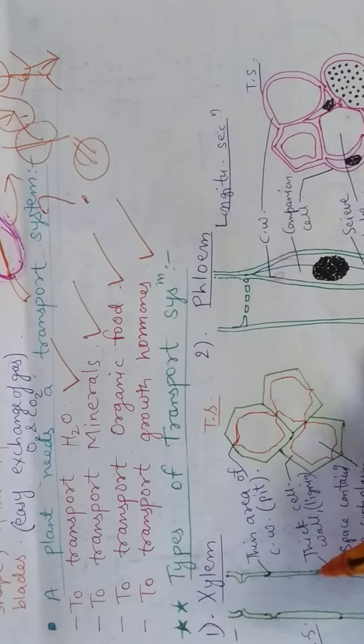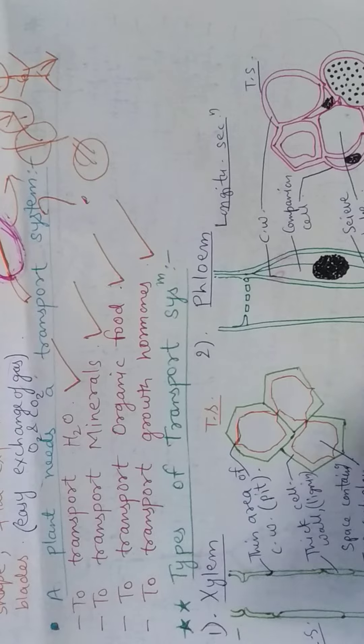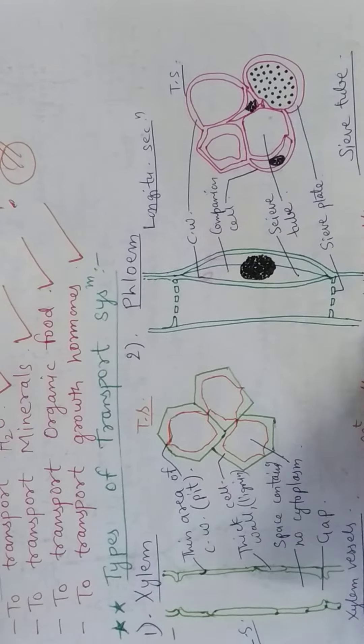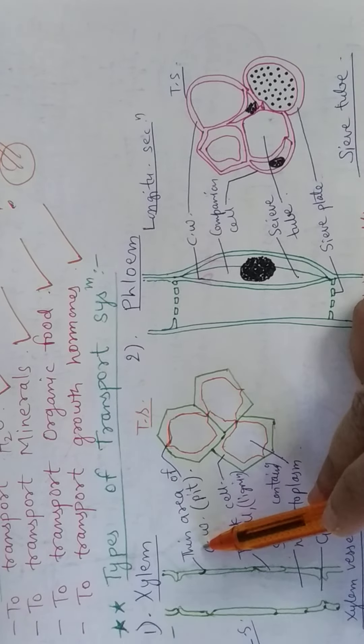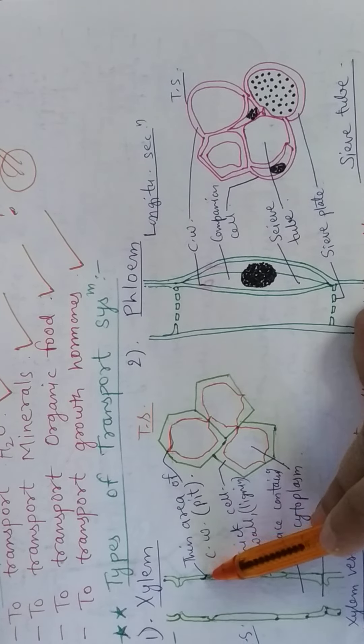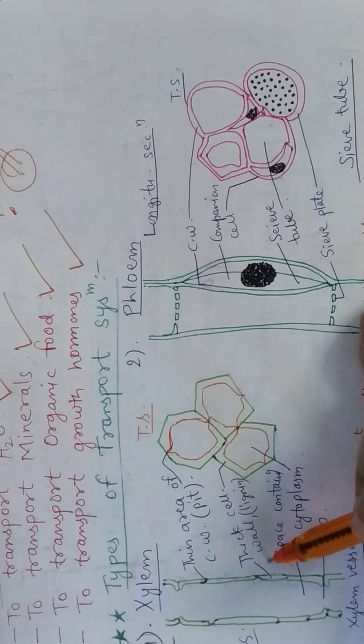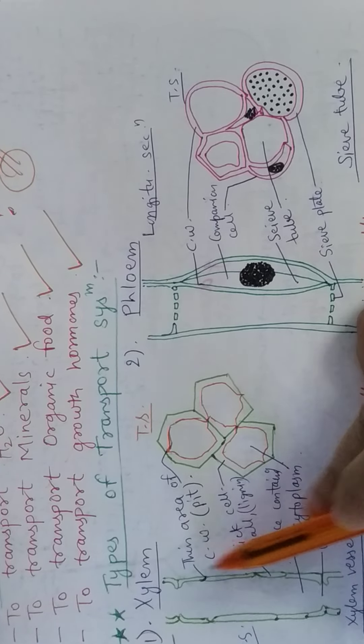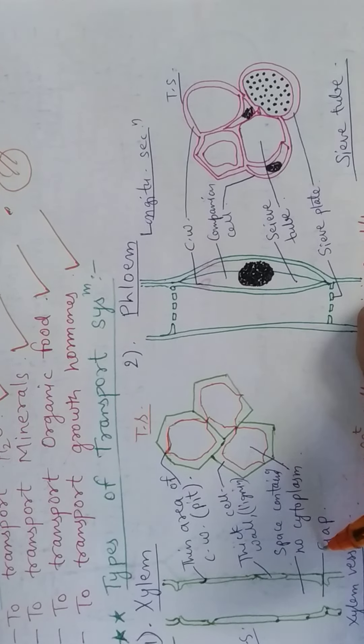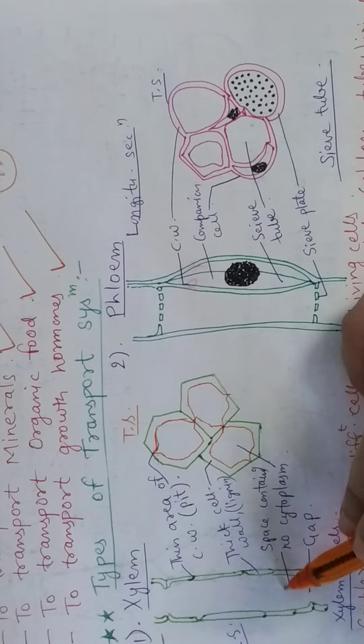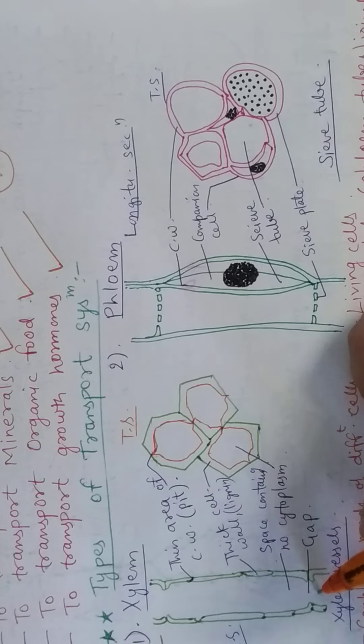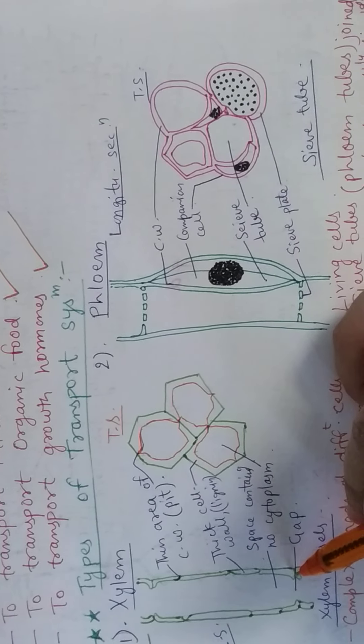What is xylem? It is a pit-like structure. The cell wall is thick, it has lignin. And where there is space, there is no cytoplasm. There's a gap present and there's no cytoplasm present.